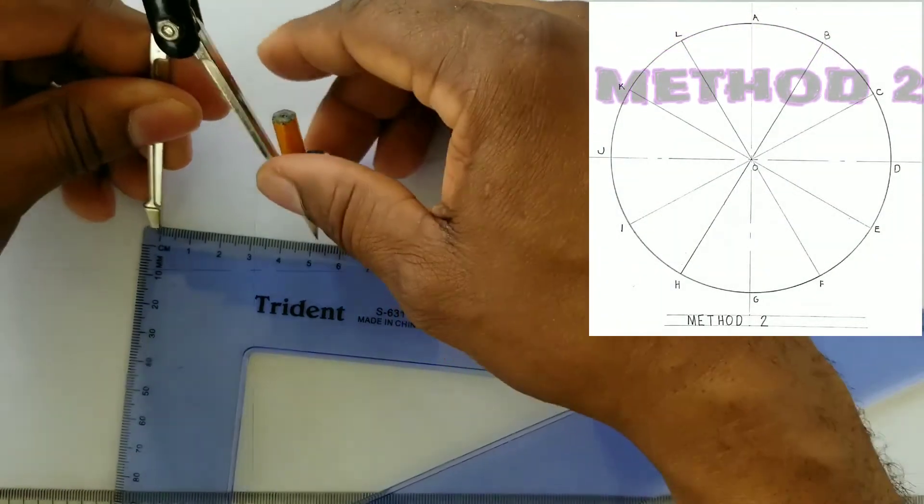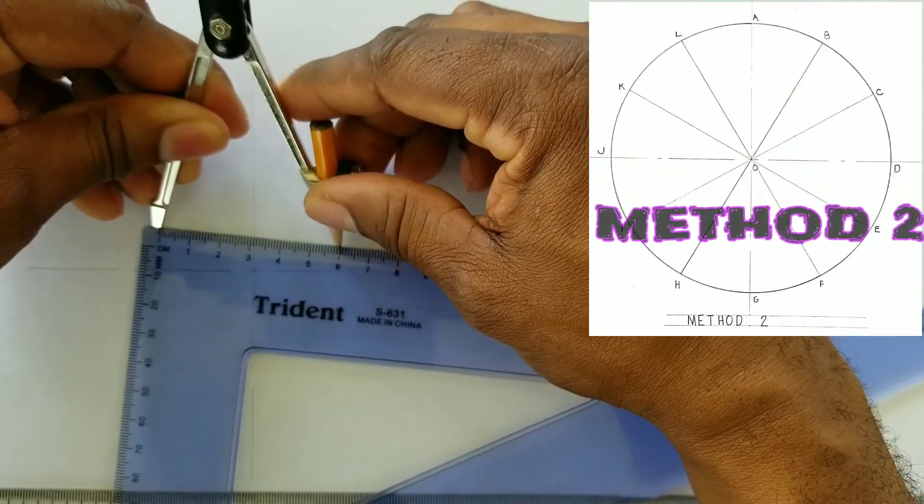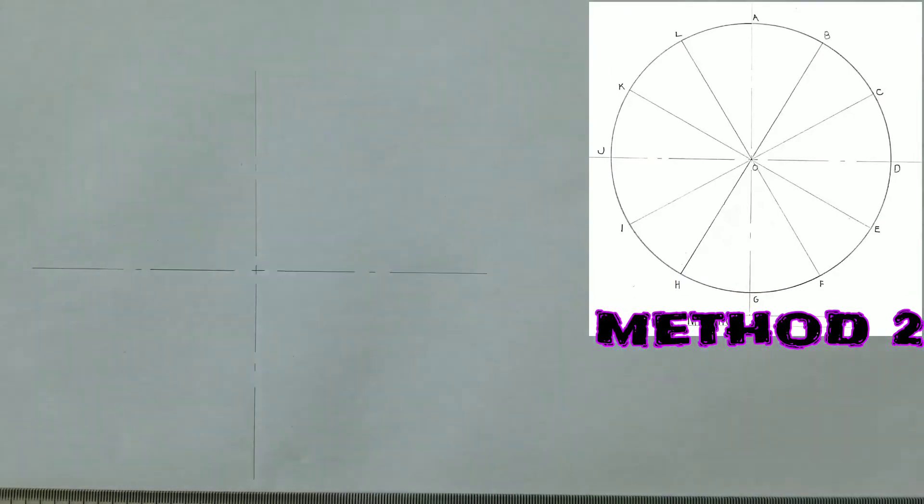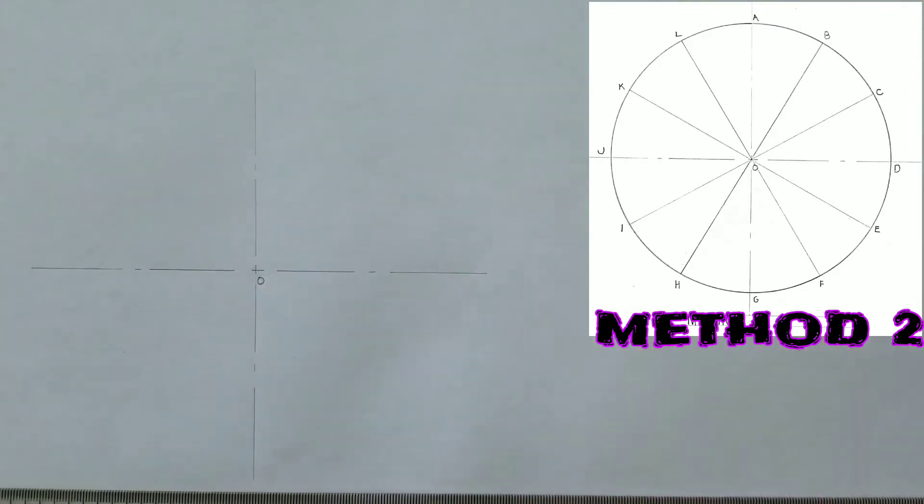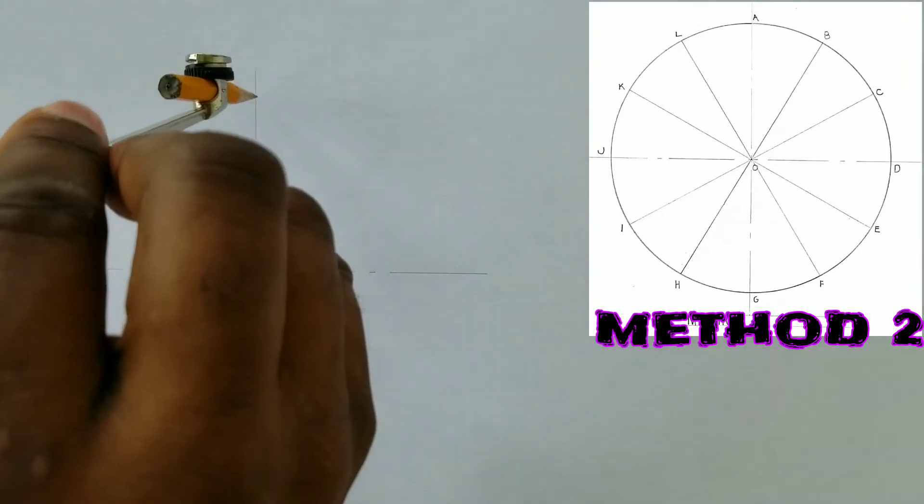We will now open our compass to a radius of 60 millimeters. From the intersection of the center lines that we will label O, we will put our compass center at this intersection and we will scribe our circle.